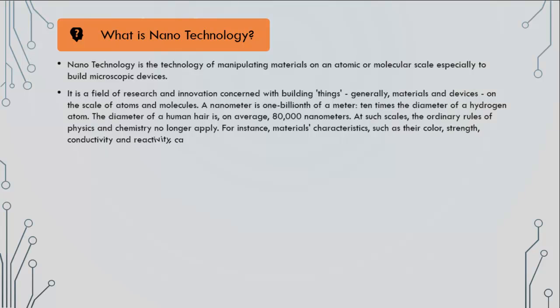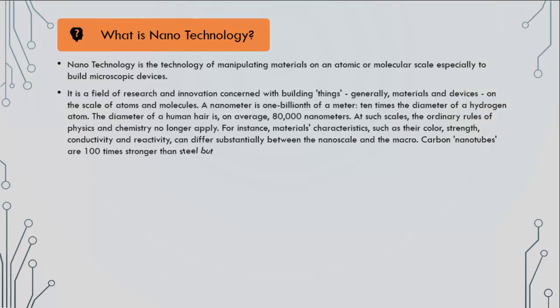At such scales, the ordinary rules of physics and chemistry no longer apply. For instance, materials characteristics such as their color, strength, conductivity, and reactivity can differ substantially between the nanoscale and the macro. Carbon nanotubes are 100 times stronger than steel but six times lighter.